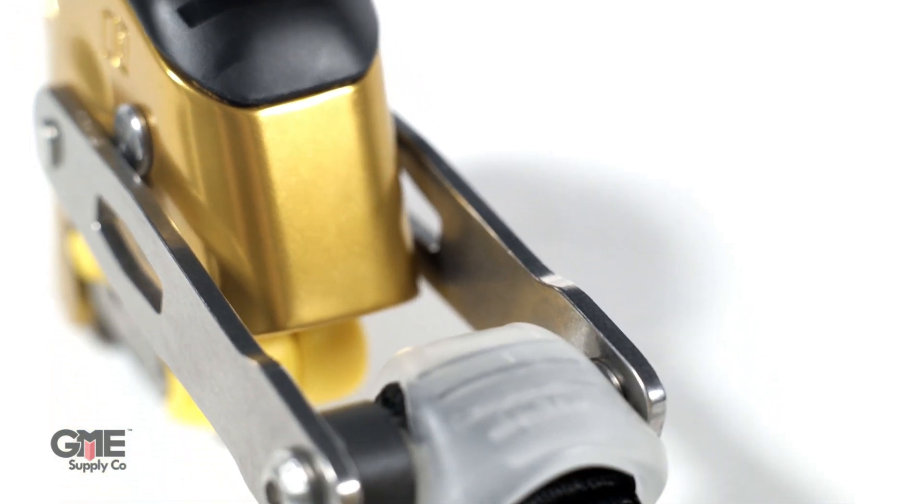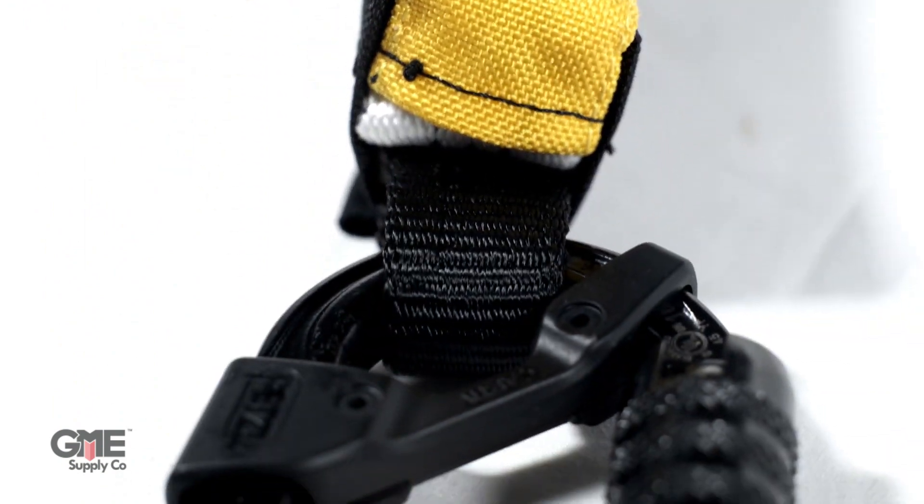This system consists of three parts: a fall arrest device, an energy absorber, and a rope lifeline.